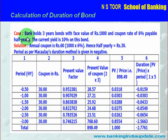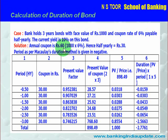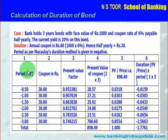Now we shall see the calculation of duration. Here is the example — let us read the question carefully. A bank holds a 3-year bond with face value of Rs. 1000. The coupon is 6%, payable half-yearly. The current yield is 10% on this bond. Calculate the duration. The annual coupon is Rs. 60, so 6% of Rs. 1000, hence Rs. 30 per half year. This means 3 years equal 6 half years.